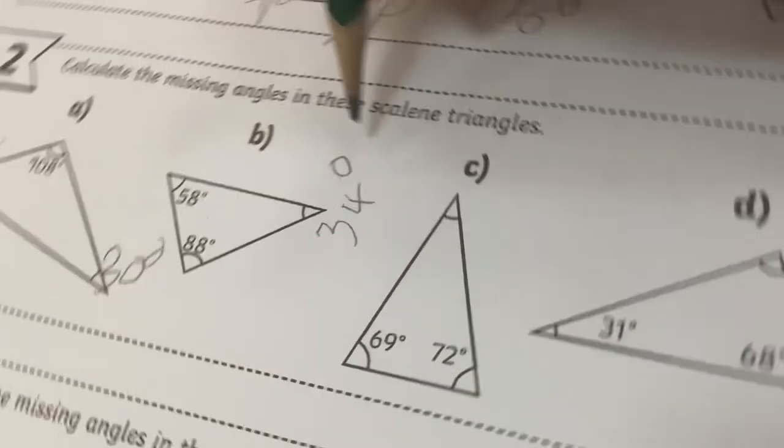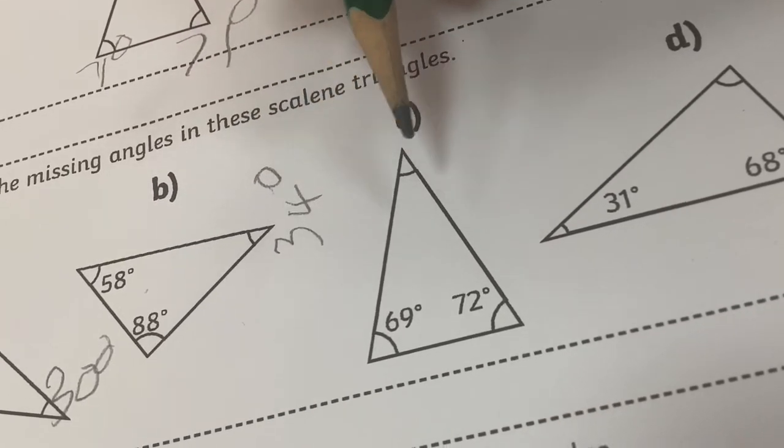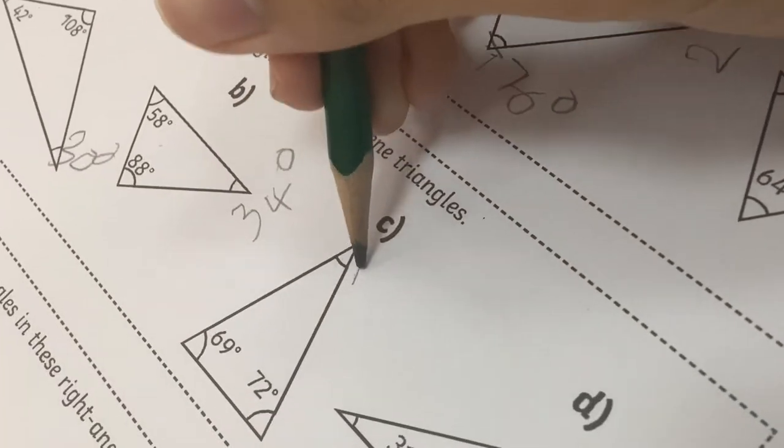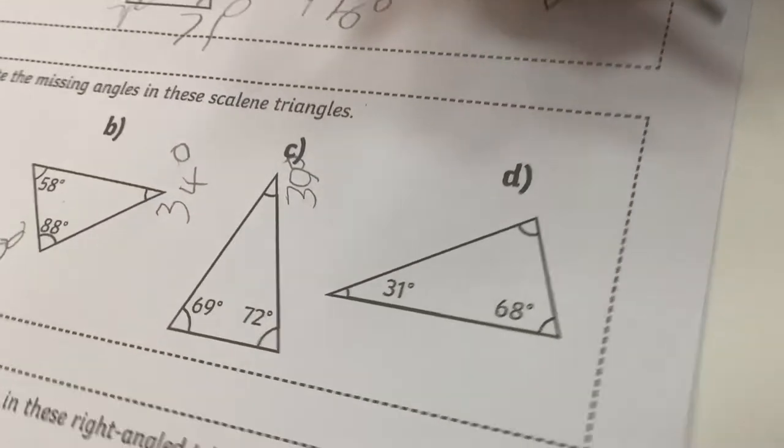Correct me if any of the answers are wrong. 69 plus 72 is 141, I'm going to put 39.